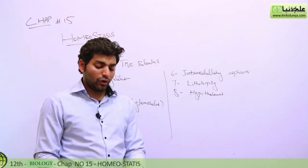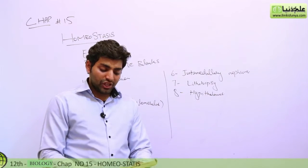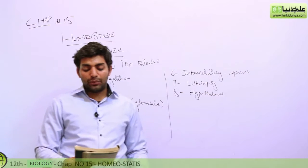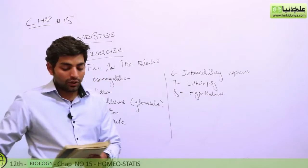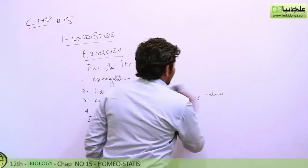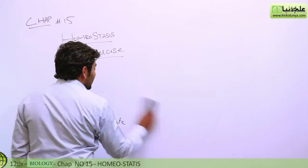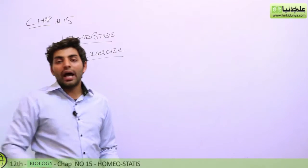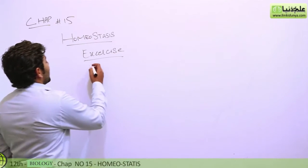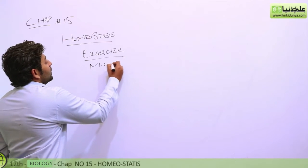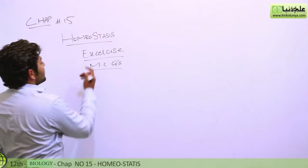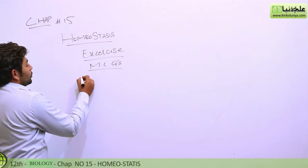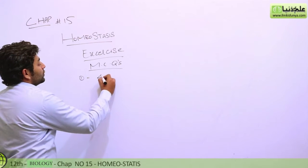Now moving to MCQs. The first MCQ asks: the protection of an internal environment from the harms of fluctuation is the definition of which of the following? The answer is option D — homeostasis, the name of our chapter.